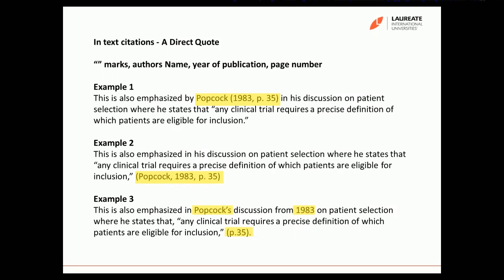There are different ways of structuring it within the body of your text. In example one, you can see: 'This is also emphasised by Popcock' and then in brackets '1983, page 35' followed by the direct quote with quotation marks around it. In example two, you simply put the direct quote with all of that information in close brackets directly after the quote, which is the most classic way of doing this. In example three, Popcock's name and the year of publication are built into the text itself, followed by the direct quote with quotation marks and the page number after it.